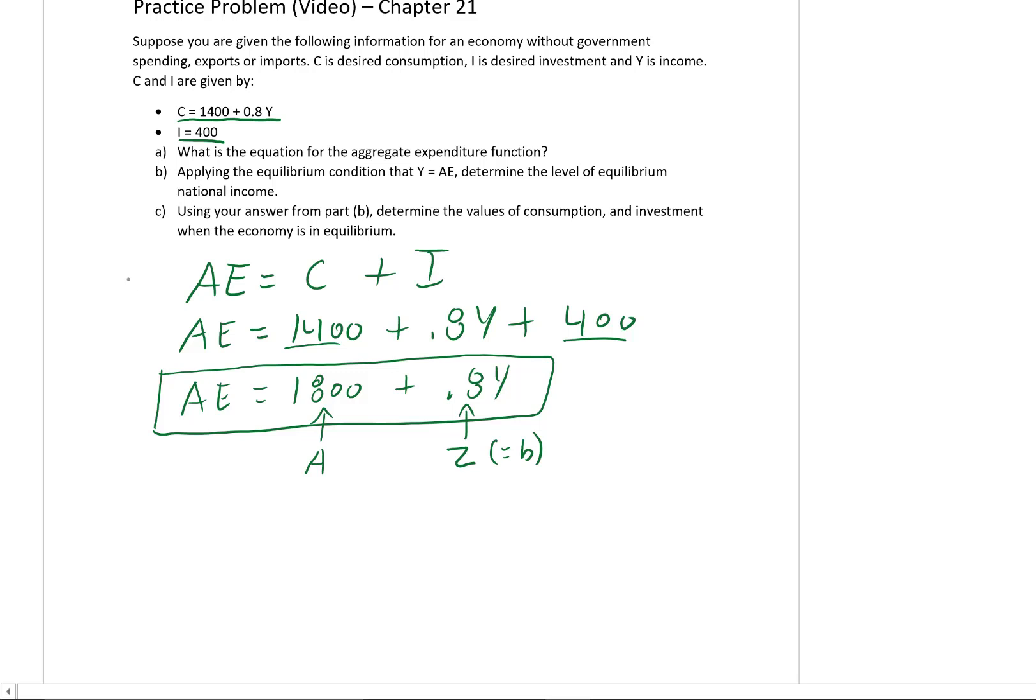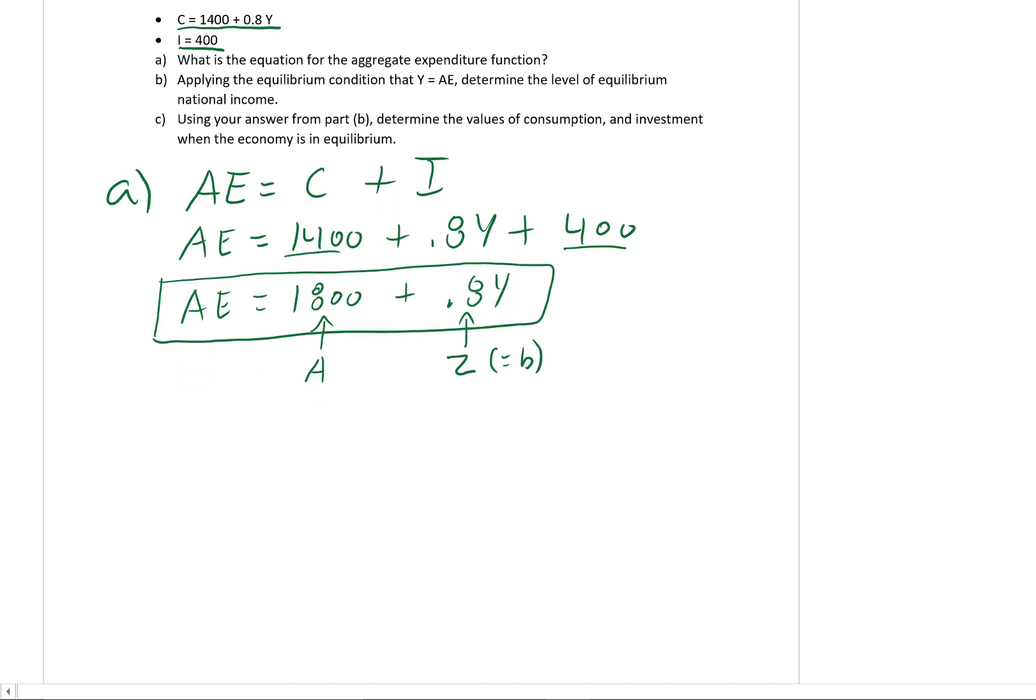Before we go any further, let's just put an A there so it's clear that we're answering part A there. So part B: applying the equilibrium condition that Y equals AE, determine the level of equilibrium of national income.